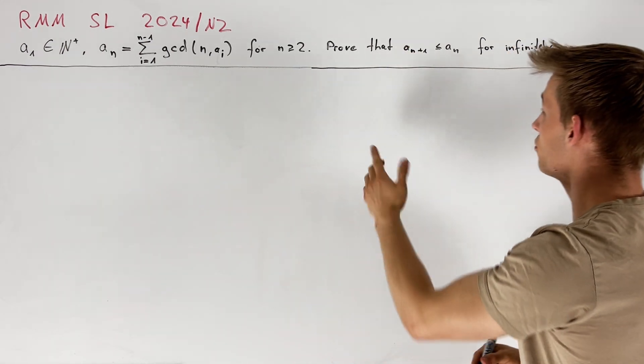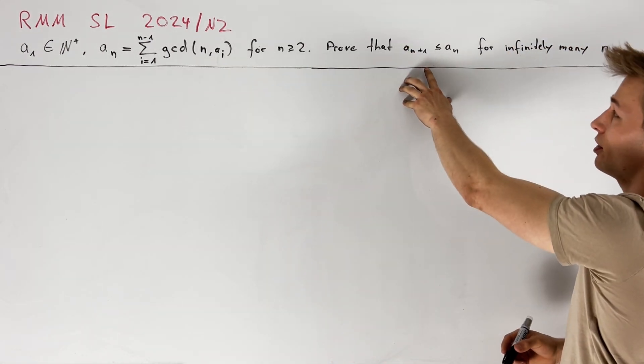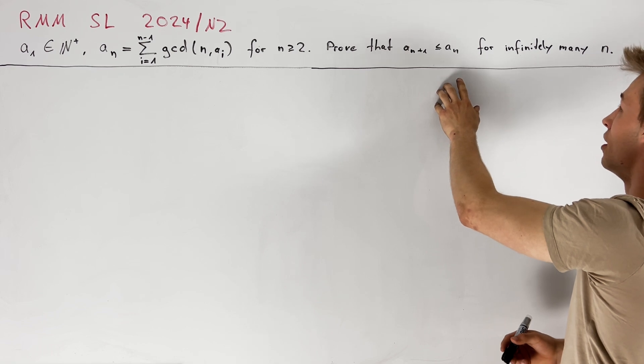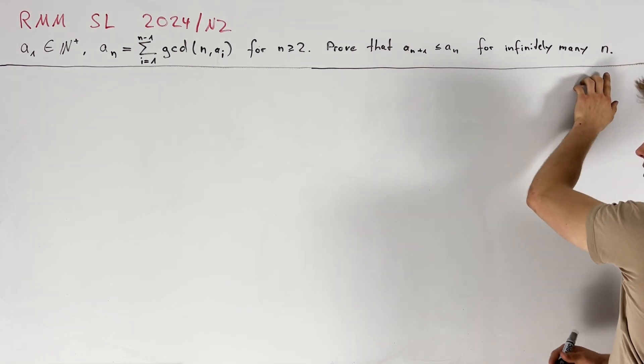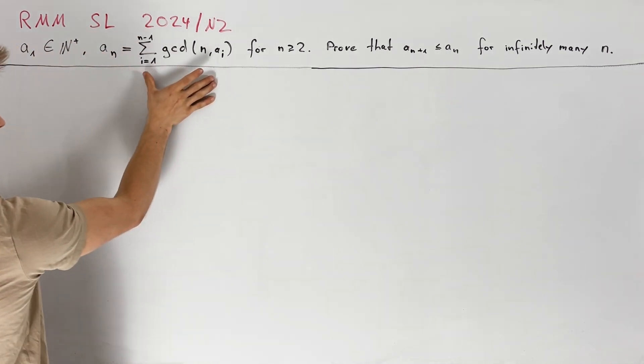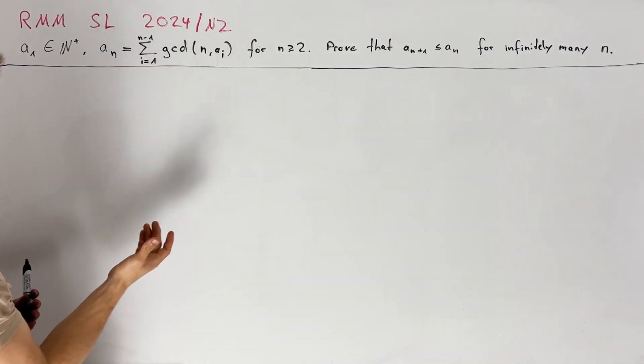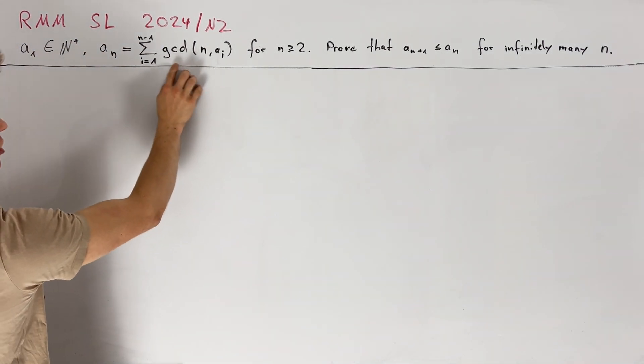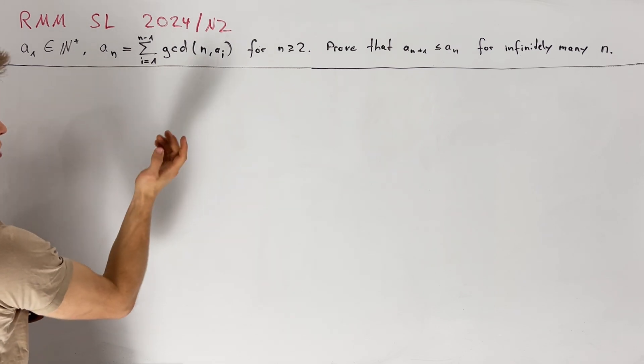Our task is now to prove that a_{n+1} is less than or equal to a_n for infinitely many values of n. This means that we have to find some values for n such that this quantity here on the right hand side is small. So all these greatest common divisors should be not too large.